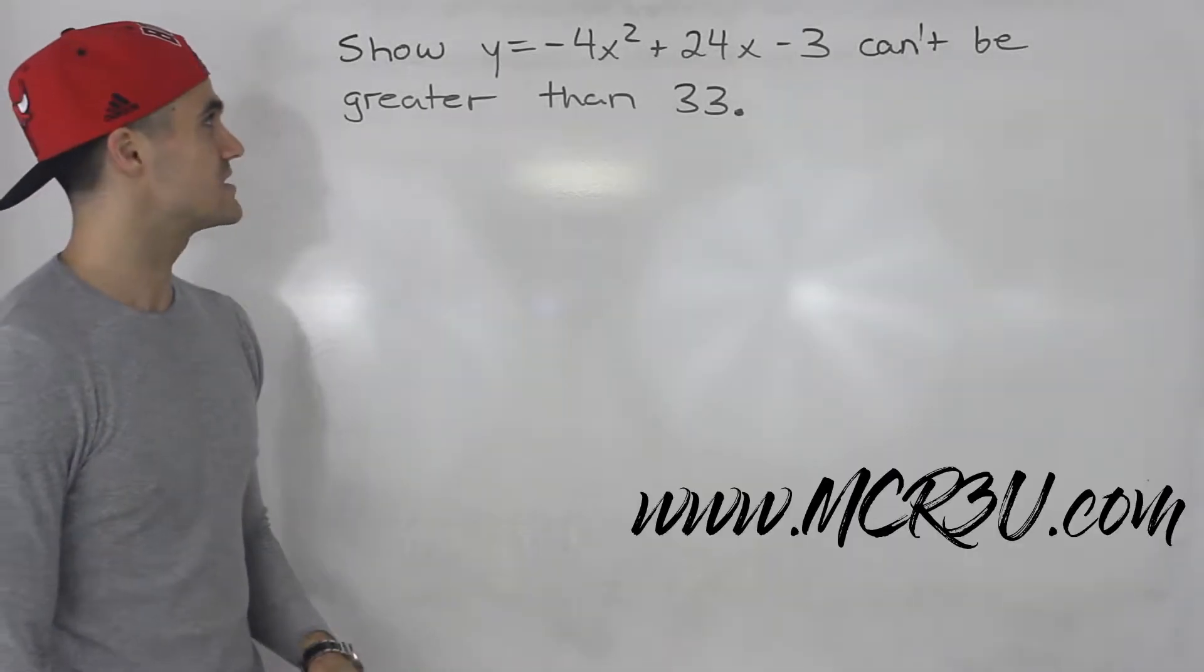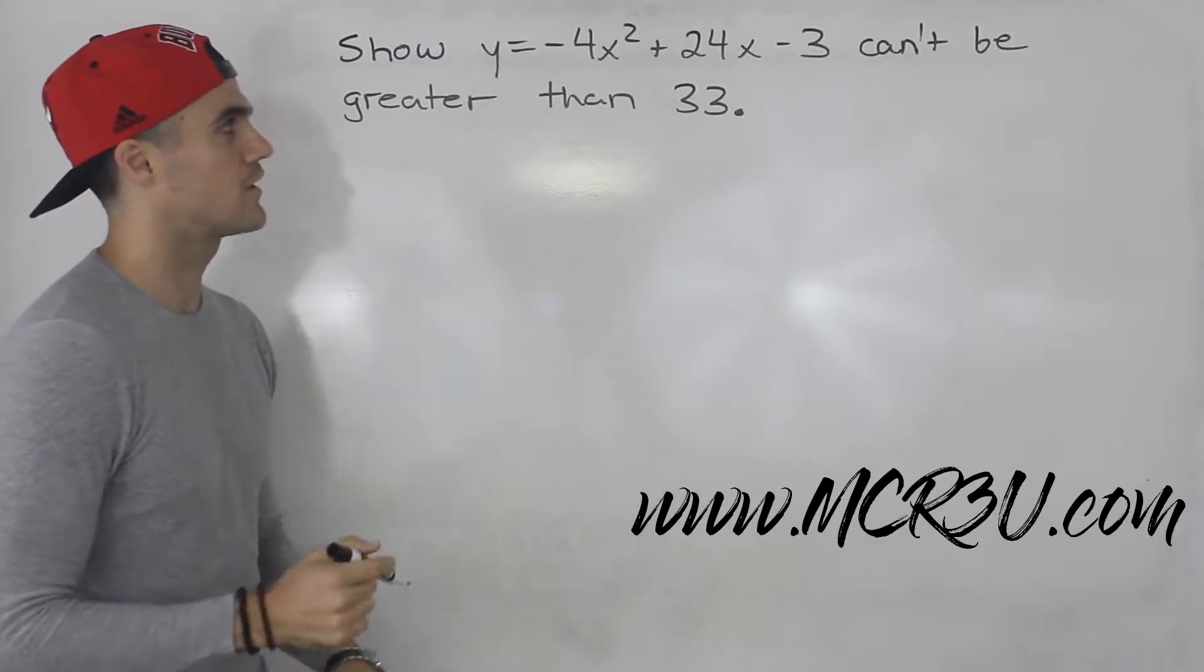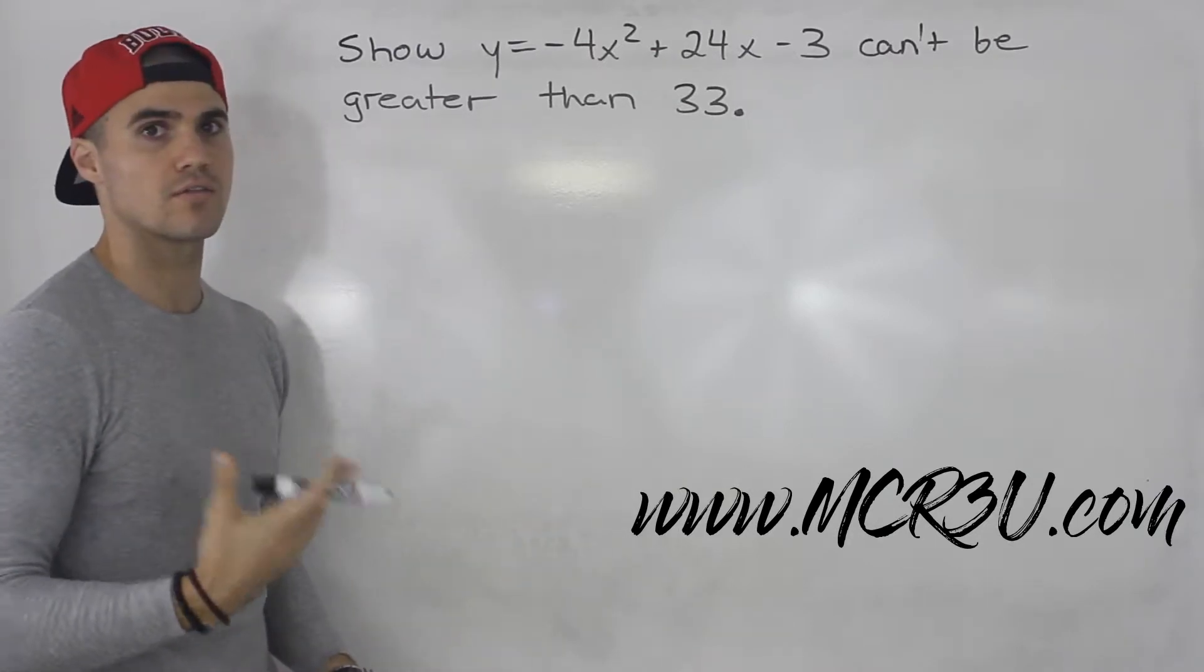What's going on everybody? Welcome back. In this video we have to show that this parabola y = -4x² + 24x - 3 can't be greater than 33.